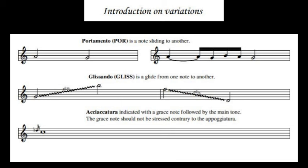The portamento is a note sliding to another. A glissando is used to glide from one note to another when you have a huge gap. You can also, instead of glissando, use the chromatic scale. Then we have the acciaccatura, indicated with a grace note, followed by the main tone. The grace note, so the acciaccatura is not stressed, it has not an accent, contrary to the appogiatura. So it is to make a very tiny figuration.